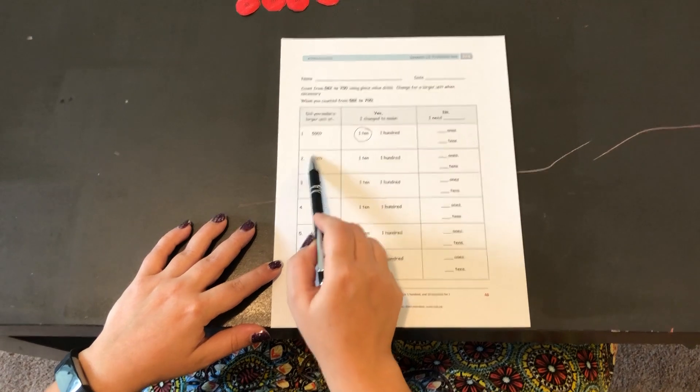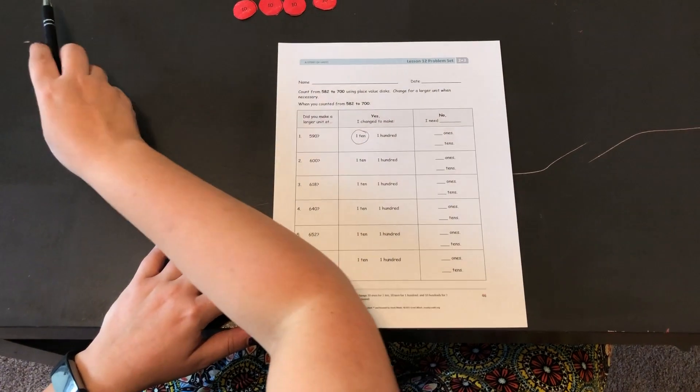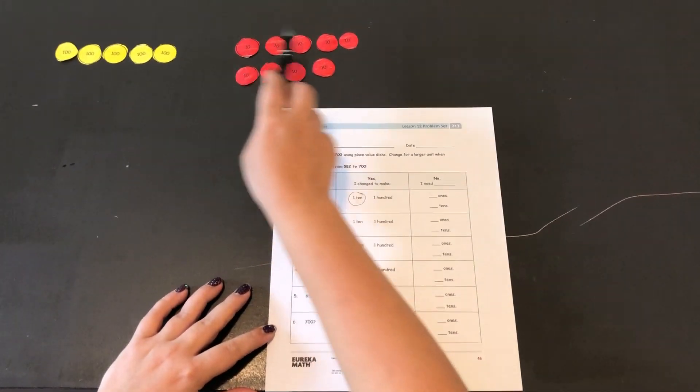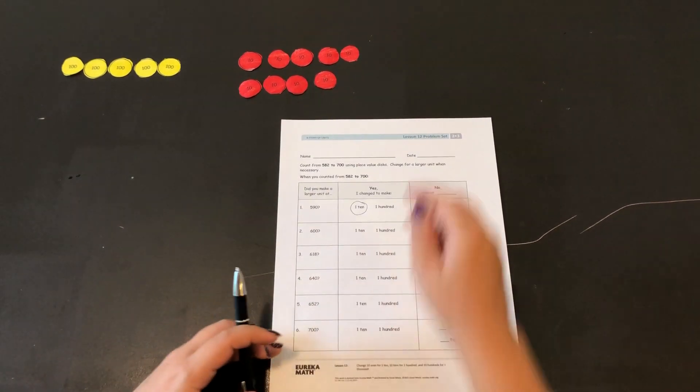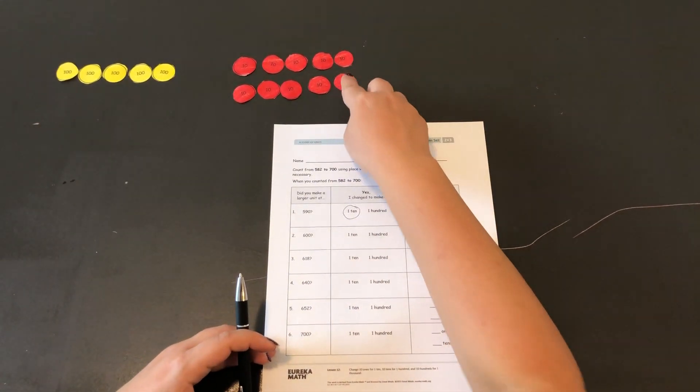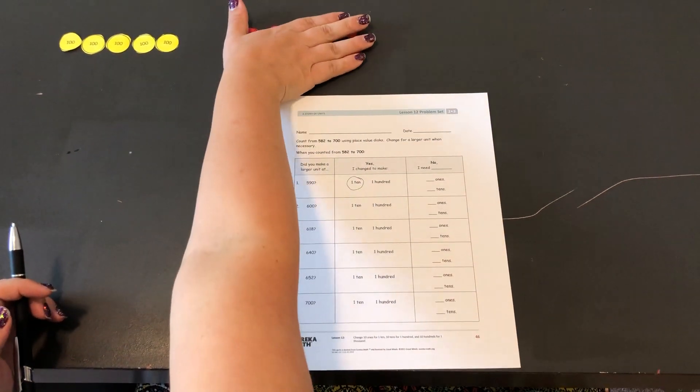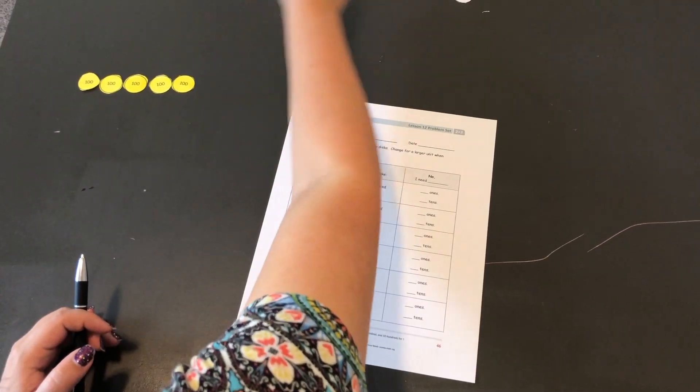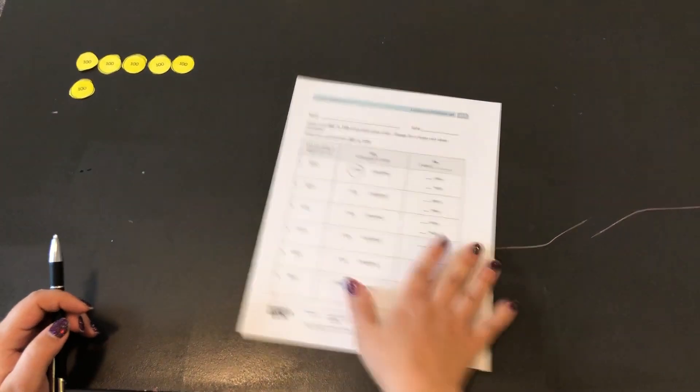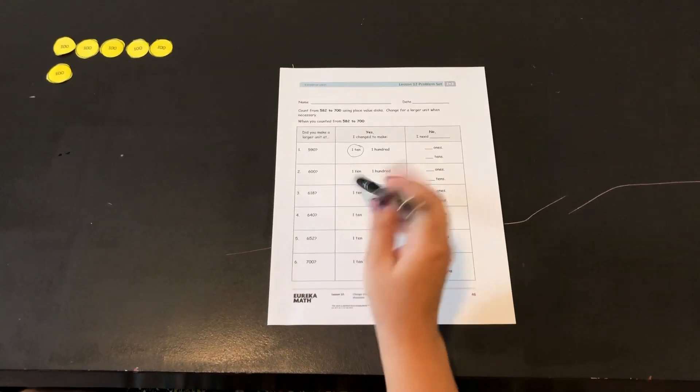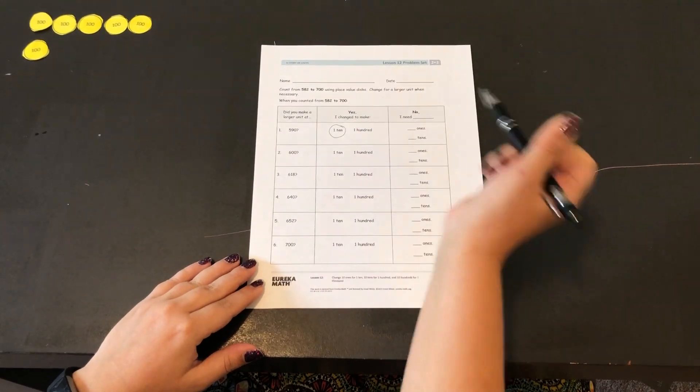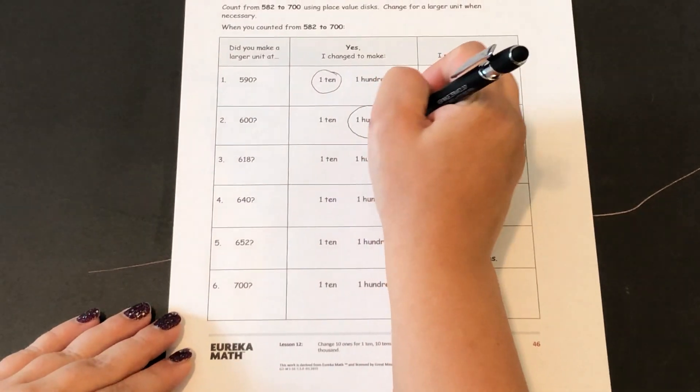The next number I want to get to is 600. So if I'm at 590 to make it 600 I need to add a ten and when I add that ten I'm going to trade out ten tens for one hundred. So yes I changed to make one hundred.